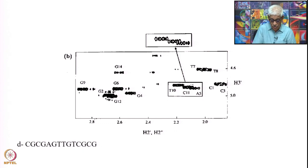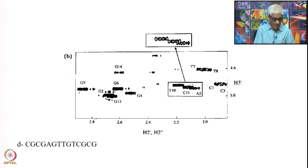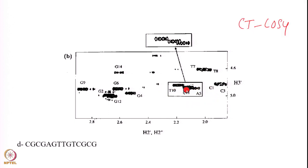Now this is the 2'-2''-3' cross peak region — this is an extremely complex area. Look at the overlaps here. You could not have analyzed this without the F1 decoupling. This is again a constant time COSY, also called F1-decoupled COSY. How complex it is — if you had the coupling information along this axis as well you would not have been able to separate out all of these components. Now we can see clearly three lines: 1, 2, 3 — there is a blow up here. Similarly there are two lines here for T7 and T8 which are very close, and C1, C3. These ones are G2 and G12 as seen earlier in the 1'-2'-2'' case as well. Therefore by doing this you are able to figure out the individual patterns, chemical shifts, and individual coupling constants.